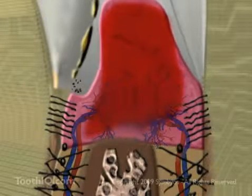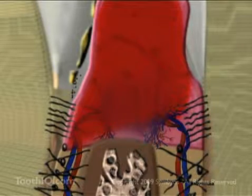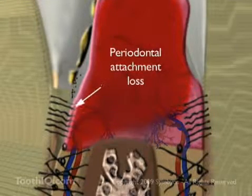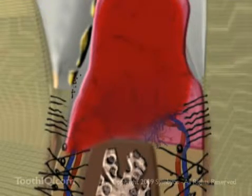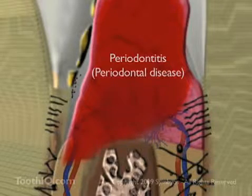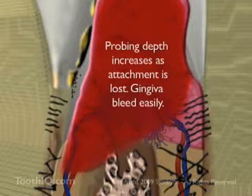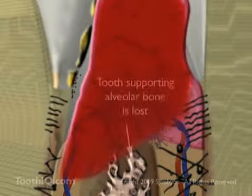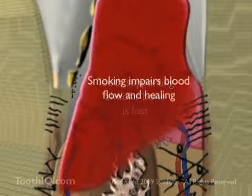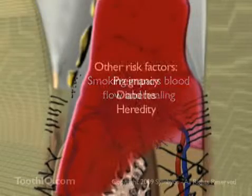Continuous exposure to acids and enzymes from plaque bacteria and the body's immune response to them eventually causes the periodontal attachment to be lost, an irreversible condition known as periodontitis. The sulcus depth increases to the point where the patient can no longer effectively remove plaque, leading to the destruction of tooth-supporting bone. Smoking impairs blood flow and can significantly interfere with a patient's ability to fight the bacterial infection. Other factors may be involved.